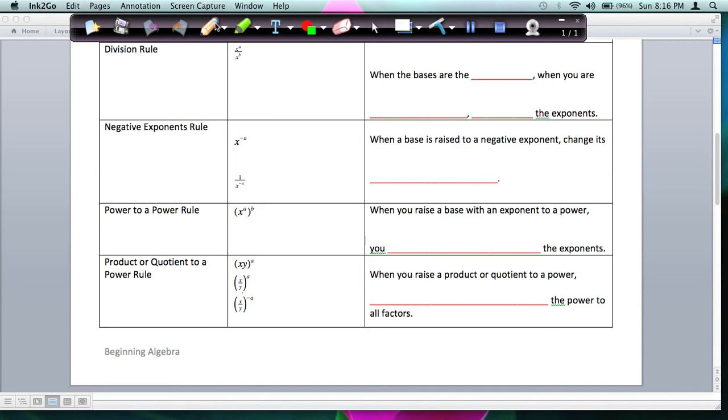Let's look at a few more rules. The division rule says that when you're dividing, again, when your bases are the same, so I have an x and an x, you subtract your exponents. Let's write that. When the bases are the same, when you are dividing, subtract the exponents.